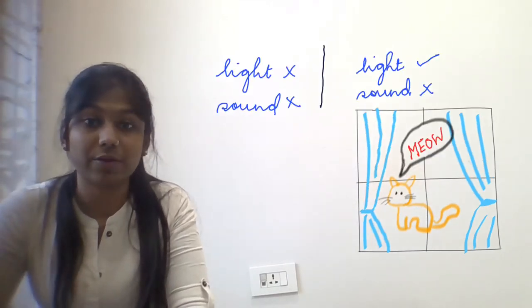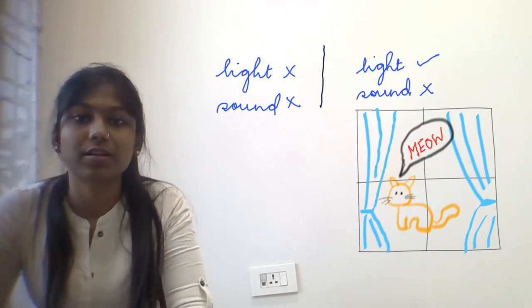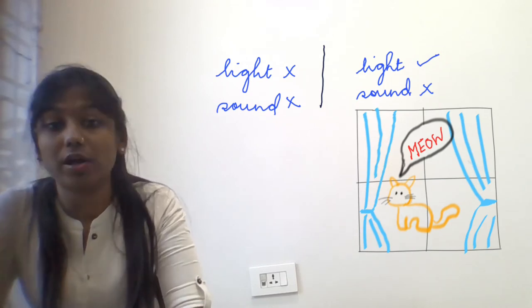The wall next to it, however, did not allow light nor sound to pass through it. That's why Shanya couldn't see the cat nor hear it from her side of the wall.